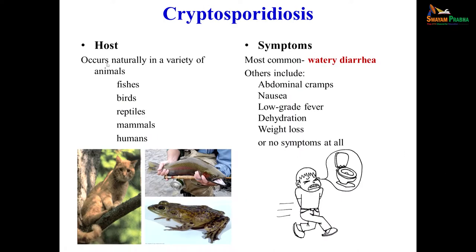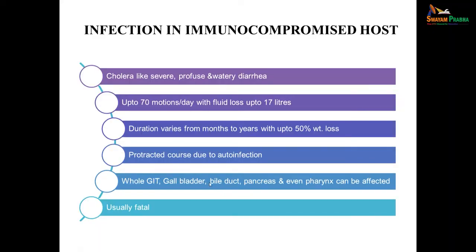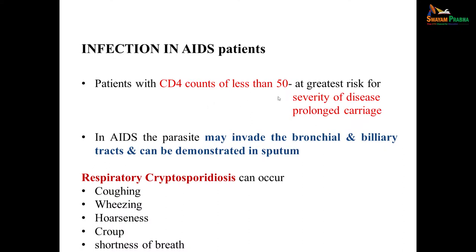The most common symptom is watery diarrhea; other symptoms include abdominal cramps, nausea, low-grade fever, dehydration, weight loss, or no symptoms at all. In immunocompromised hosts, it produces a very severe cholera-like diffuse watery diarrhea — up to 70 motions per day with loss of up to 15–20 liters of water. Duration can vary from months to years with up to 50% weight loss. There is a protracted course due to autoinfection, and the whole GI tract, bile ducts, pancreas, and even pharynx can be infected; it is usually fatal in immunocompromised hosts. In AIDS patients with CD4 count less than 50, they are at greatest risk for severe disease and prolonged carriage.